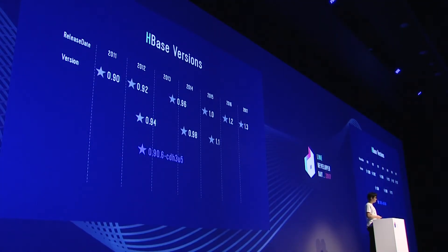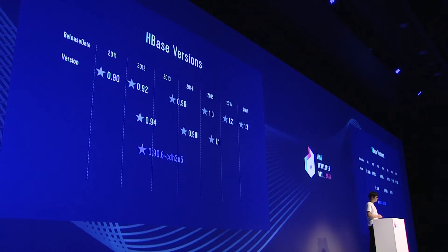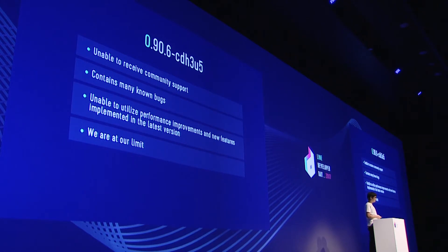With regards to the HBase version, this shows the history of HBase versions. Currently, 1.3 is the latest version, with 1.2.6 being the latest stable version. But currently, we are using 0.96 update 5 — that's the version we're using, packaged via CDH. As you can see from the history, it's quite an old version. The community has already left behind that version, and there are lots of bugs still remaining. Even if we report the bugs, they tell us to upgrade the version, so no one can really take care of those existing bugs.